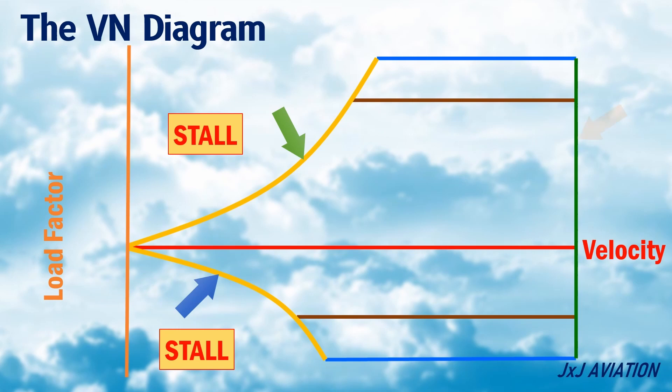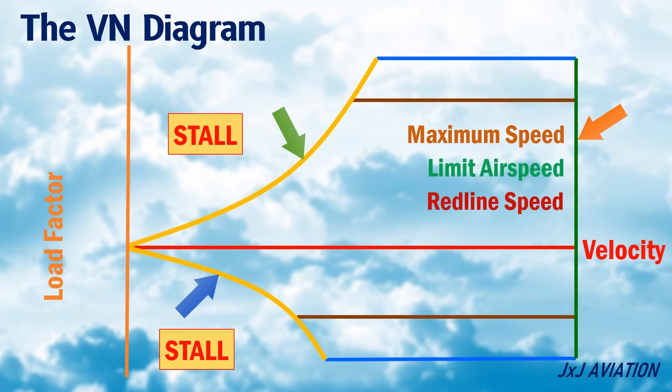This vertical line represents the maximum speed at which the aircraft is designed to fly. This speed is called the limit airspeed or redline speed. Beyond this speed there will be structural damage on the aircraft.